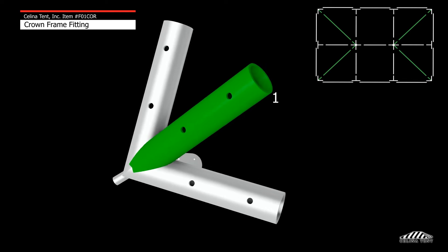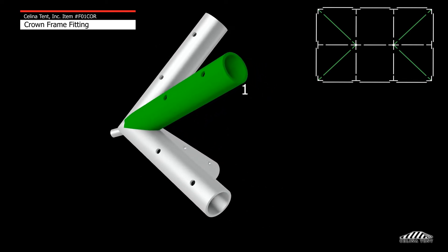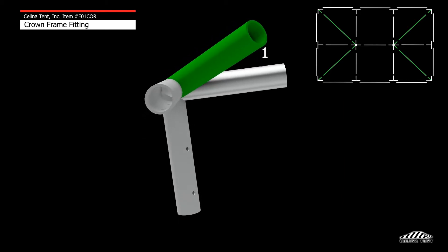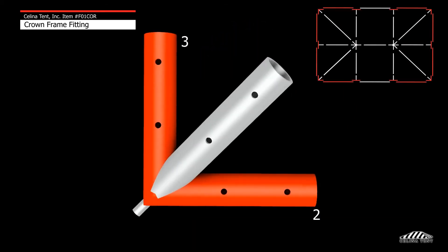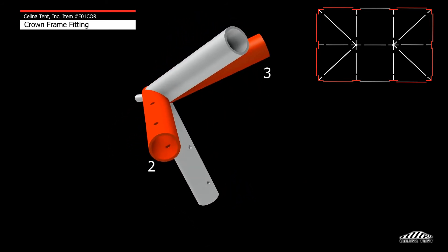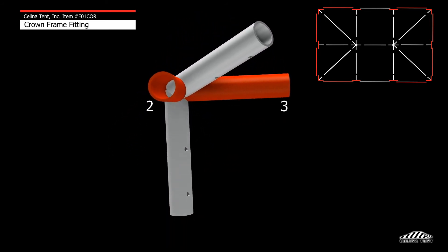The angled protrusion, or protrusion one, will attach to the hip rafter which will then connect to the crown or peak fitting. The horizontal protrusions two and three will connect to the spreaders then connect to the opposite corner fitting or side tee location.